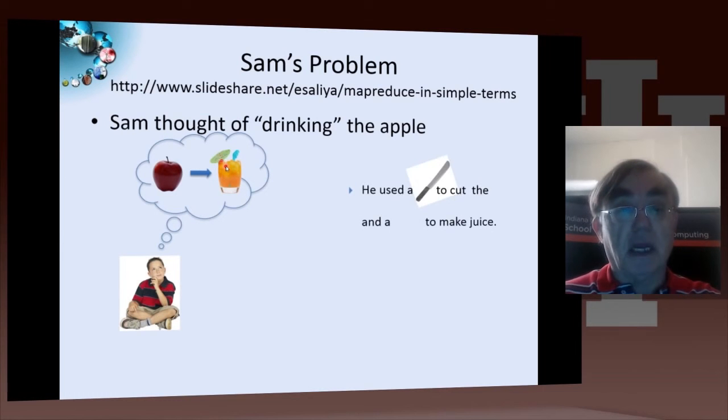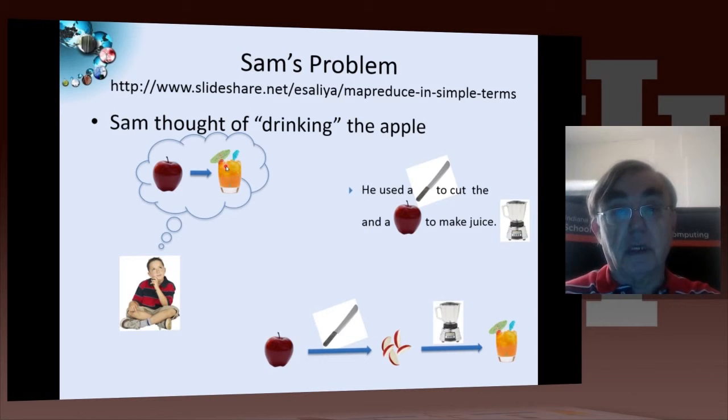On this slide here, we give an example coming from Judy Chu and Celia, one of our students, which explains MapReduce in simple terms. And it also introduces the concept of parallelism for the problem. And the process, the map we're doing, mapping fruit into drinks.